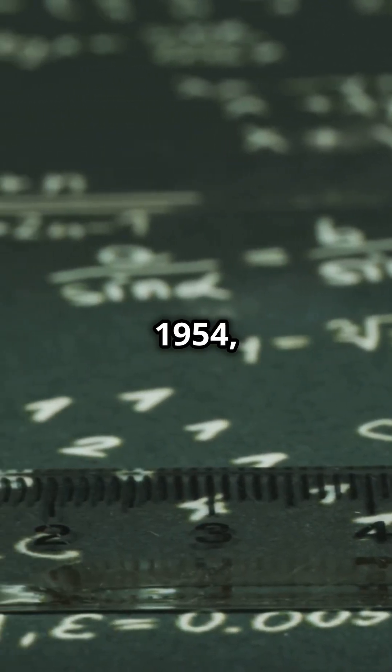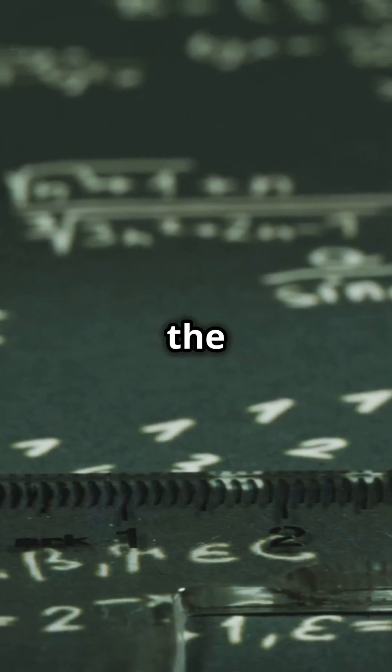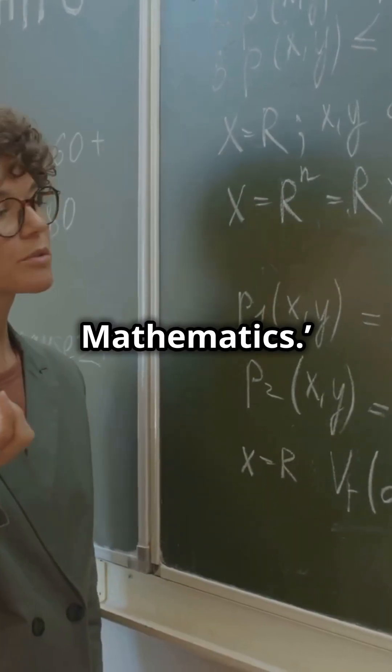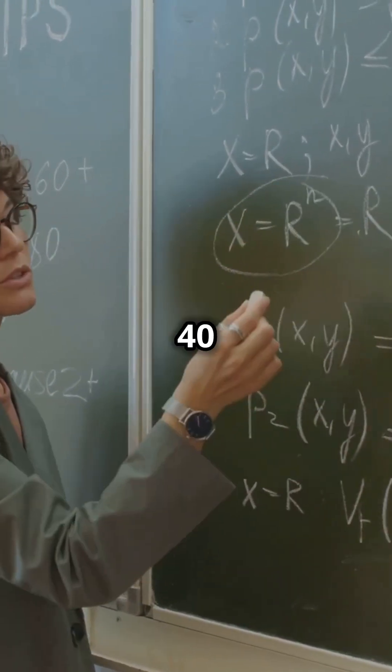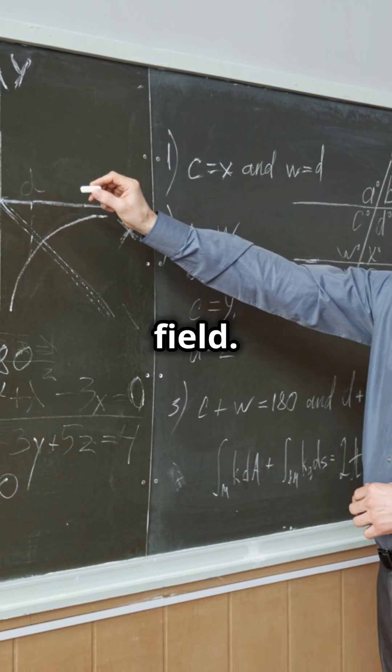In 1954, he won the Fields Medal, often dubbed the Nobel Prize of Mathematics. The Fields Medal is awarded every four years to mathematicians under 40 who have made significant contributions to the field.